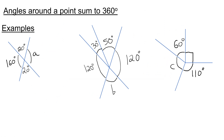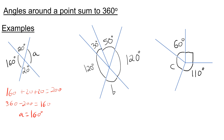Angles around a point add up to 360 degrees. If we look at this first question and want to find A, you might notice it's going to be 160. But we could also add up the angles we know: 160 plus 20 plus 20, which is 200. We can then subtract 200 from 360 to get 160, which is A. So A is 160 degrees.